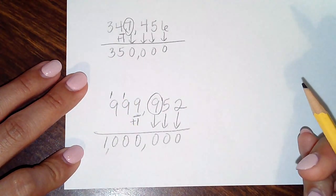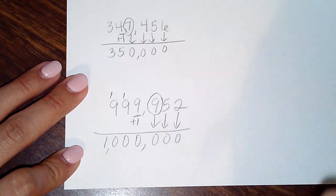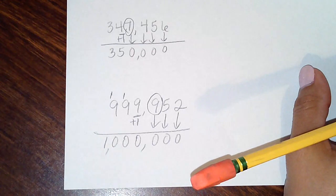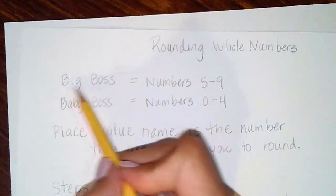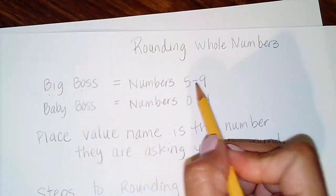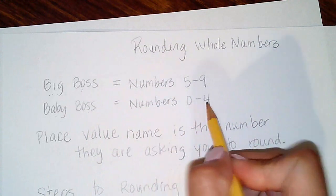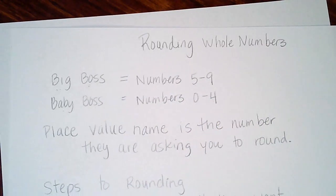I hope this little trick helped you to round numbers. As I said before, big bosses are numbers that are five to nine, and baby bosses are numbers that are zero to four. Hope this helps — bye!